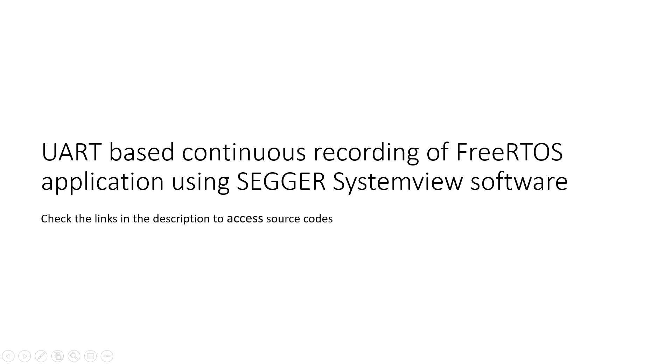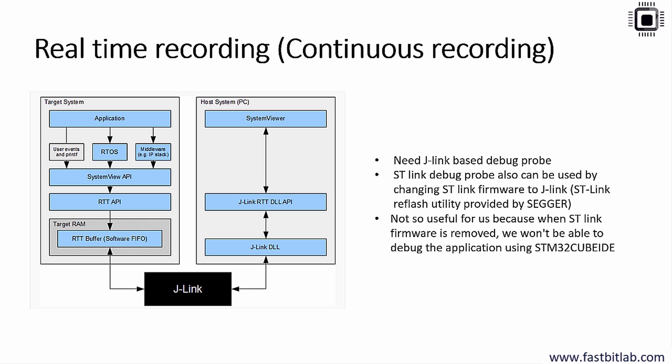In this lecture, let's understand real-time recording, also called continuous recording. The SEGGER SystemView supports continuous recording in three ways: using a J-Link based debug probe, using IP based communication, and using UART communication.